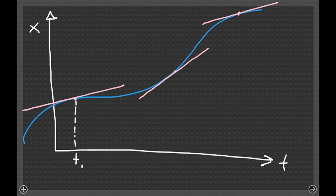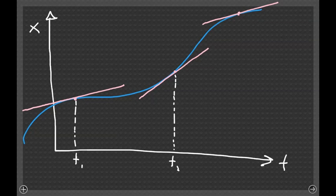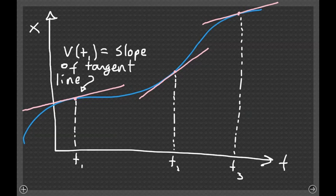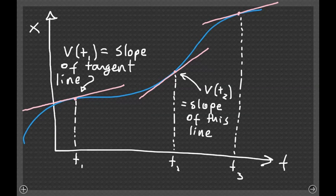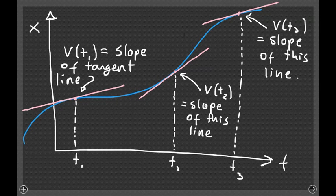For general motion — a position versus time plot that looks like the blue line — we can draw tangent lines at different points: at time T1, at time T2, and at time T3. The slope of those tangent lines tells us the instantaneous velocity at each particular time. At T1, T2, and T3, the slope of the respective tangent line gives us the velocity of the object at that moment.